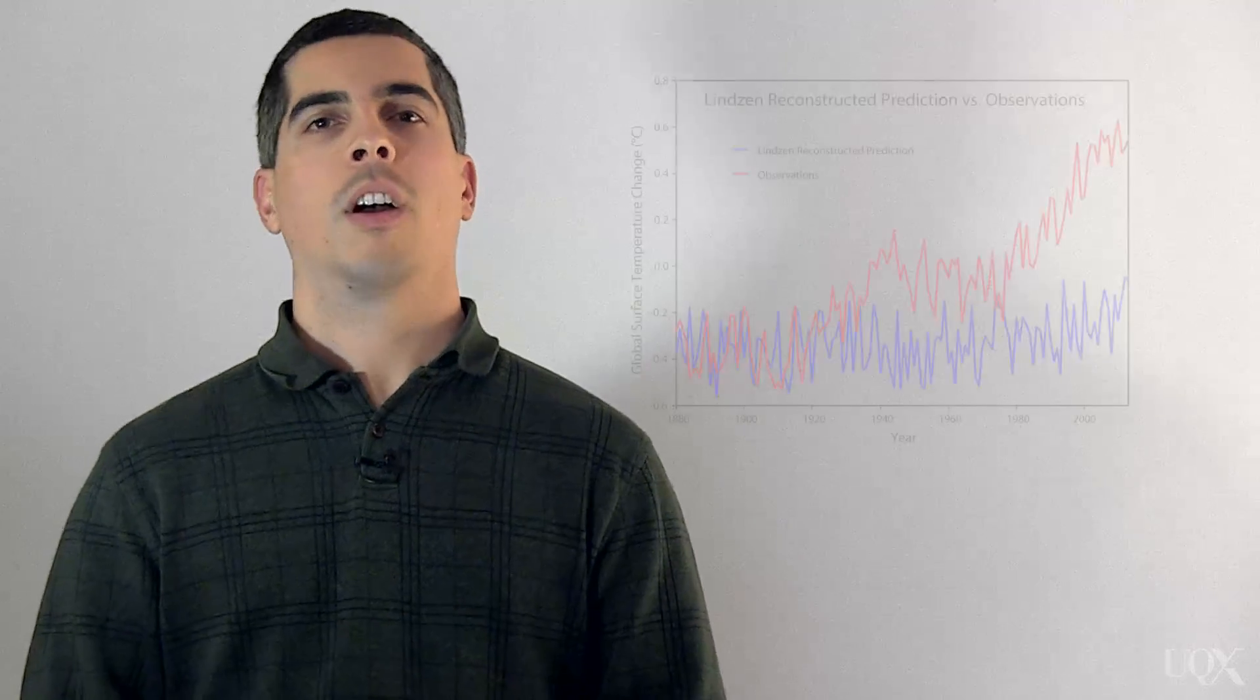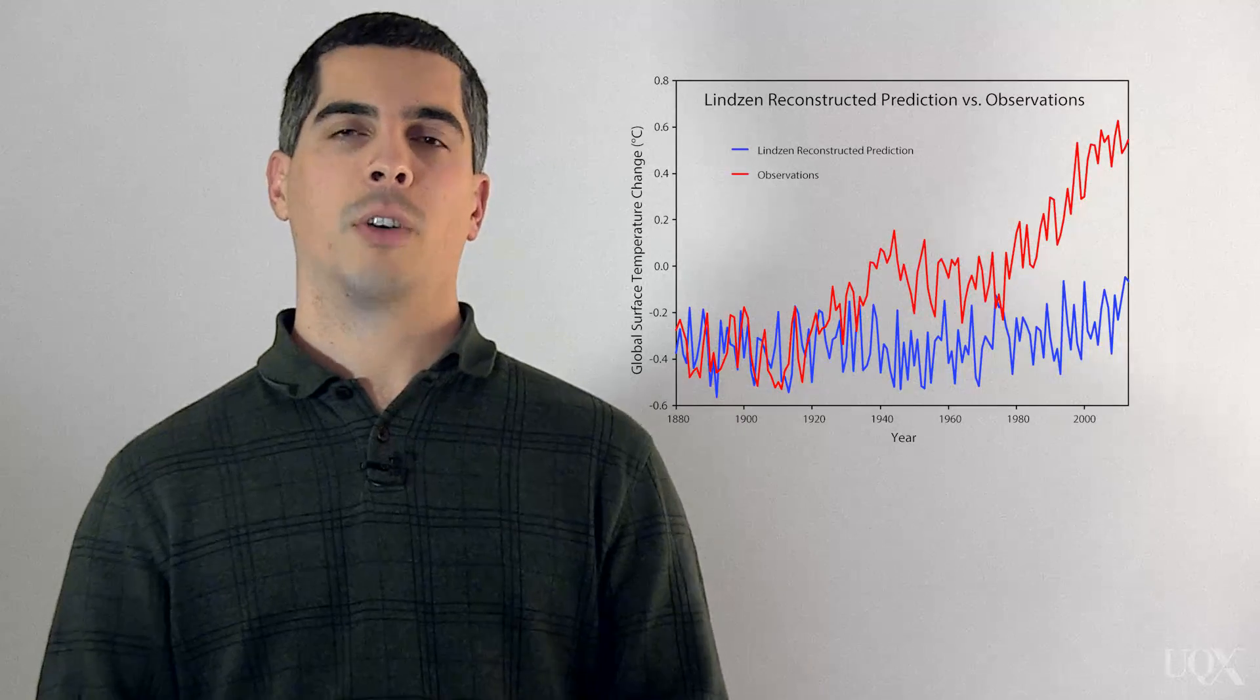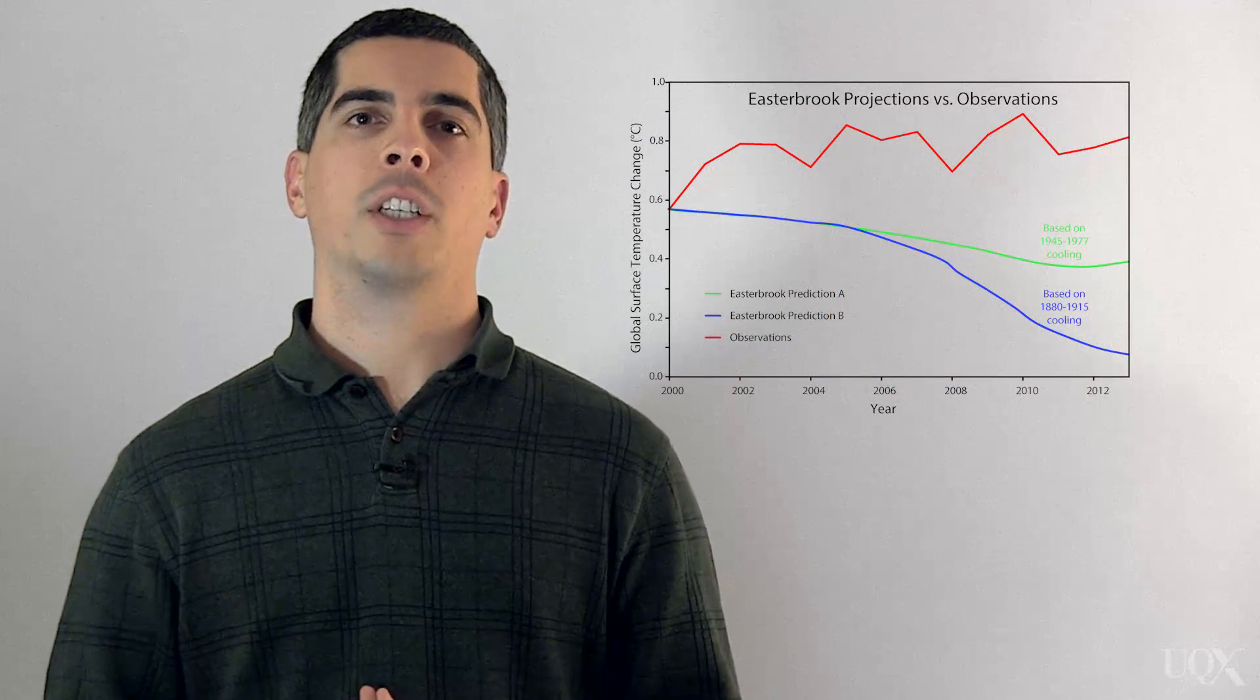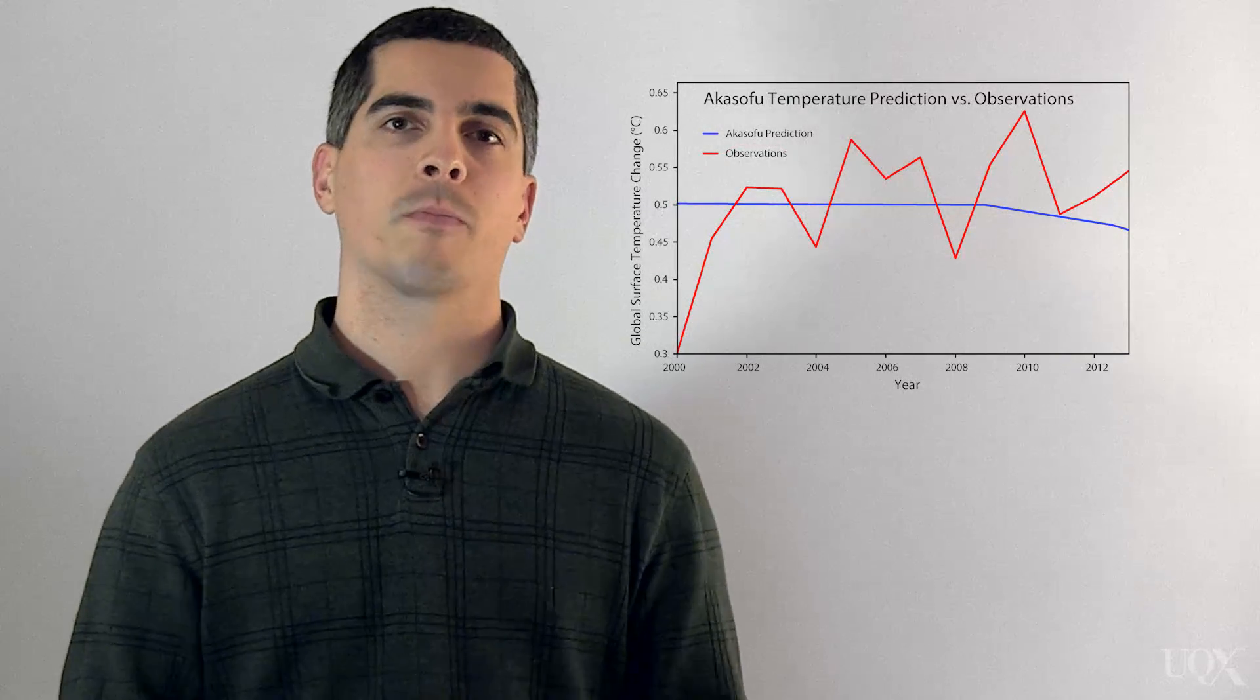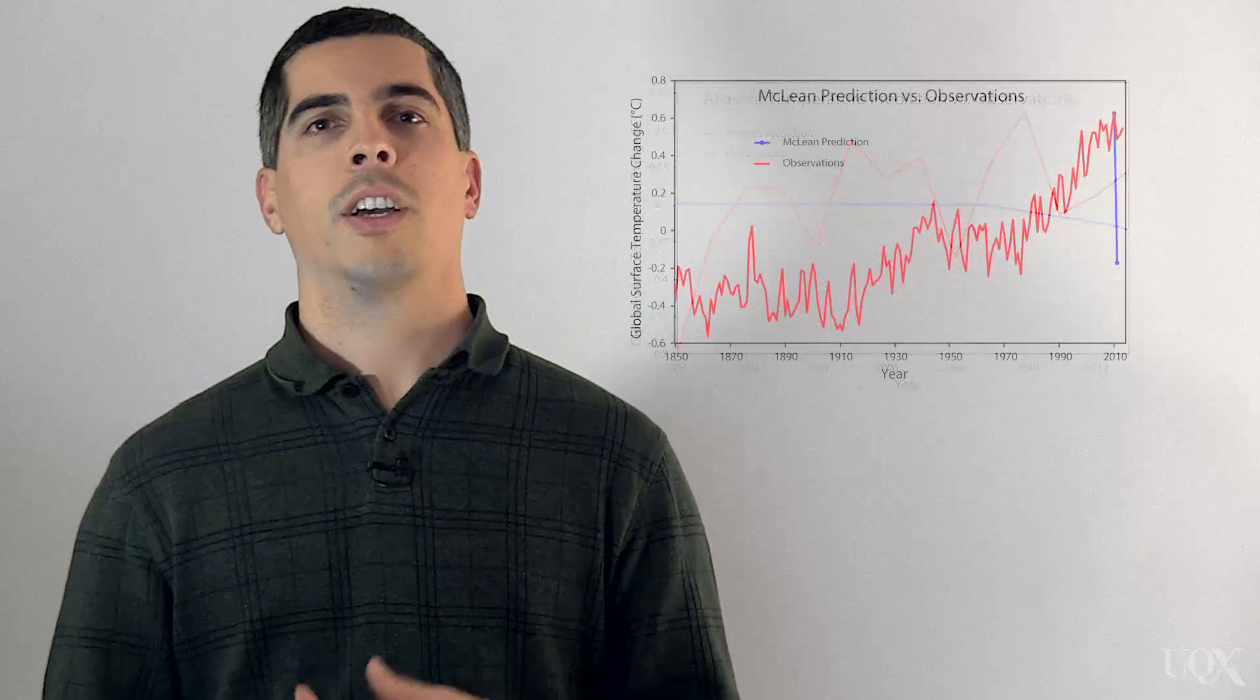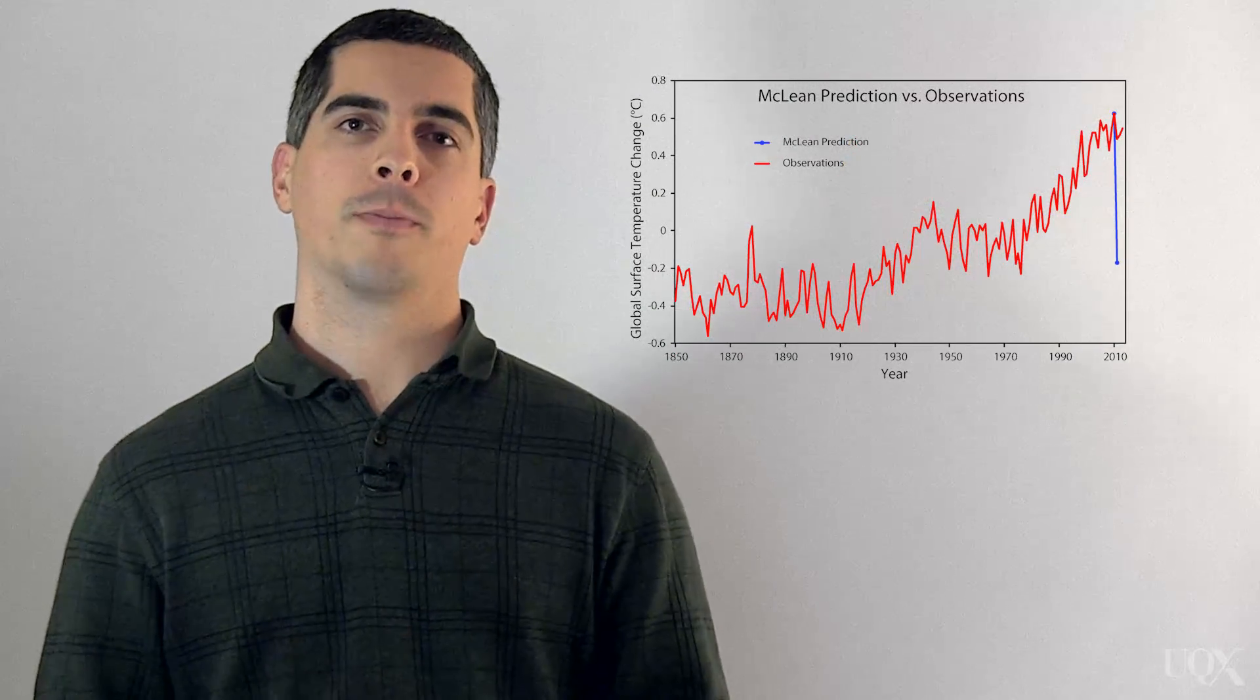As climate scientists Tom Knutson and Robert Tullea said in 2005, if we had observations of the future, we obviously would trust them more than climate models. But unfortunately, observations of the future are not available at this time. There's no way to predict the future without a model. Like all models, global climate models are imperfect, but they've made some very accurate predictions for decades. On the other hand, predictions made by climate contrarians have been way off. They've mostly predicted global cooling while we've actually experienced global warming. That's a poor track record, not nearly as accurate as predictions made by climate models.